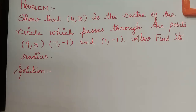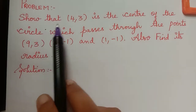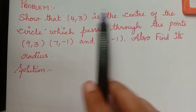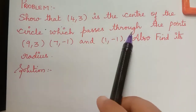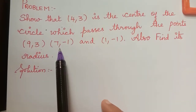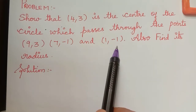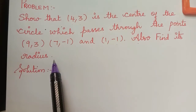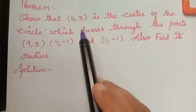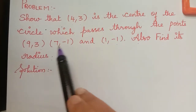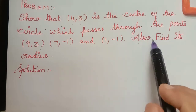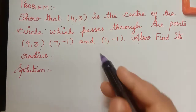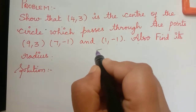Hello students, the next problem under the topic coordinate geometry is: they are asking us to show that 4 comma 3 is the center of the circle which passes through the points 9 comma 3, 7 comma minus 1, and 1 comma minus 1. We also have to find its radius. So first we have to show that 4 comma 3 is the center, and after that we have to find the radius.